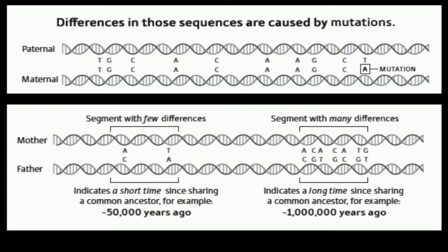Close relatives have few differences. Distant relatives will have more differences. Originally, these differences have come about due to mutations, and they accumulate over generations. Deep human history is learned by looking at these changes.